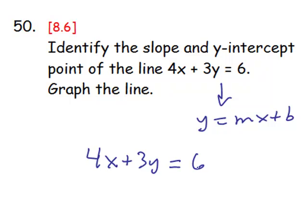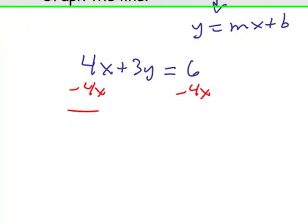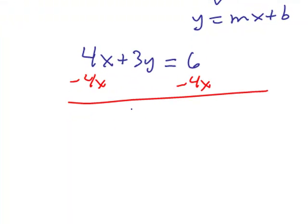We want to get y by itself. So the first thing that we want to do is subtract the 4x, and that will then be put first. So 3y is negative 4x plus 6.